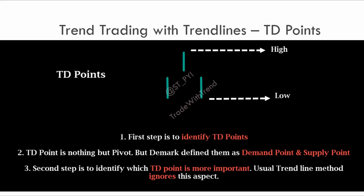TD points are nothing but pivot points. Mr. DeMarc defined them as a demand point and a supply point. The first step is to identify TD points on the chart — there are very specific rules for this, which we'll be taking up shortly. The second step is to identify which TD point is actually more important.